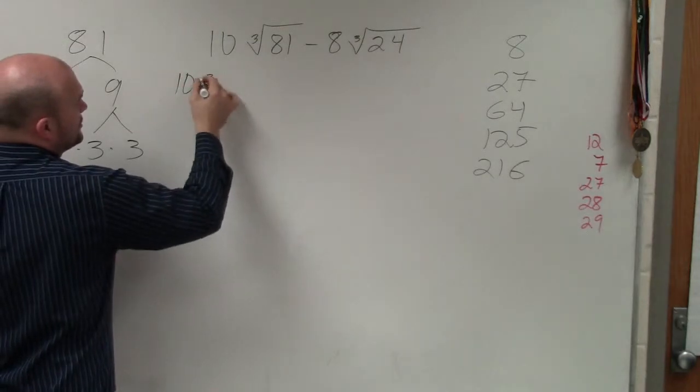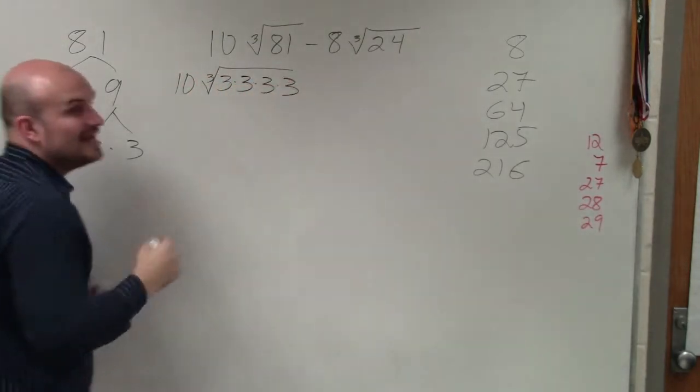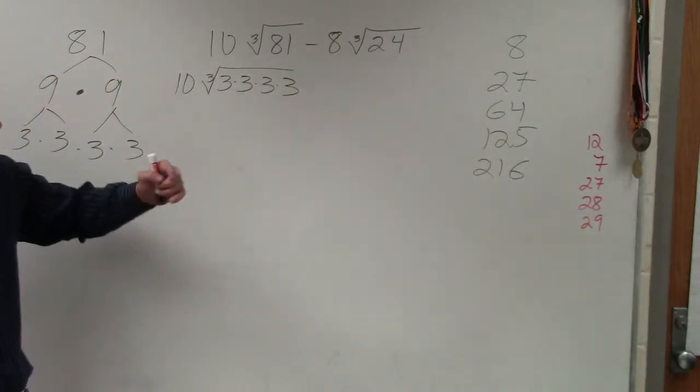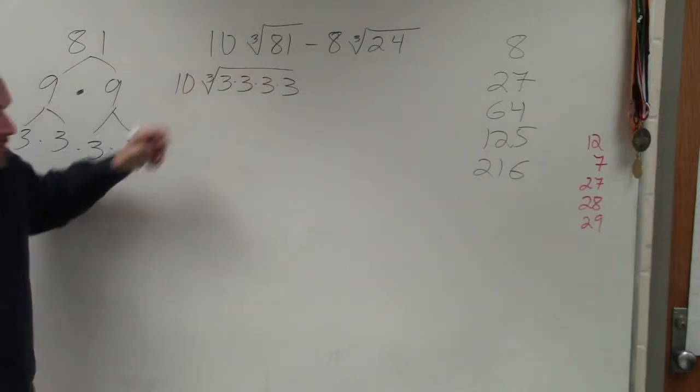So therefore, you'd have 10 times the cube root of 3 times 3 times 3 times 3. And what we last discussed, Diamond, is when you're using this, since you're taking the cube root, how many groups of 3's do you need to take the cube root of them? 3.